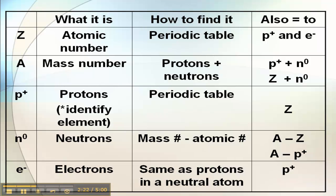So you're going to have a copy of this chart that you can fill in. Z is your atomic number. We're going to find it on the periodic table. It's also going to equal protons and electrons. That's in a neutral atom. A is your mass number. That's your protons plus the neutrons.